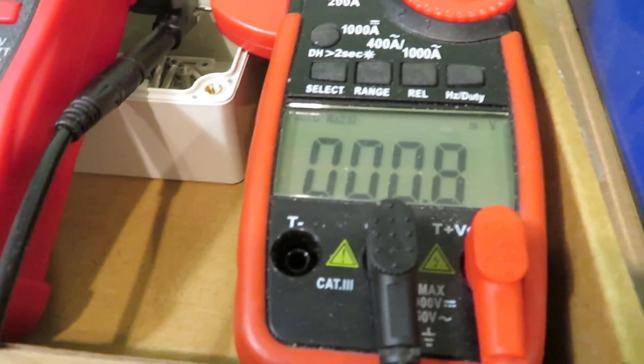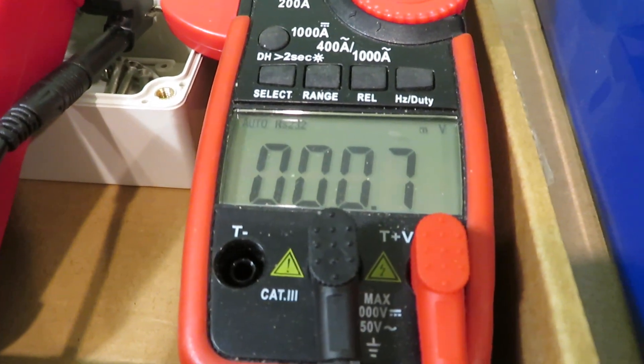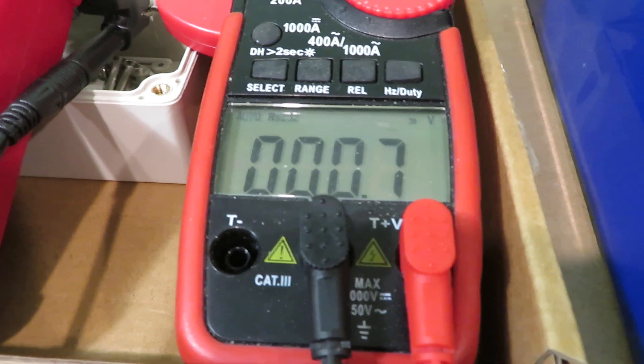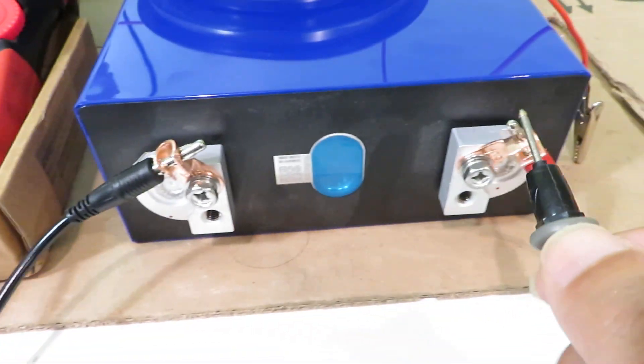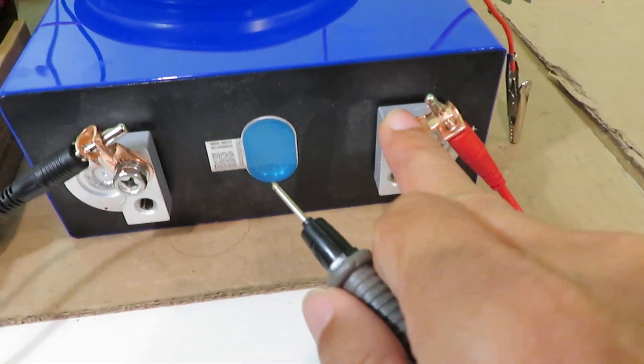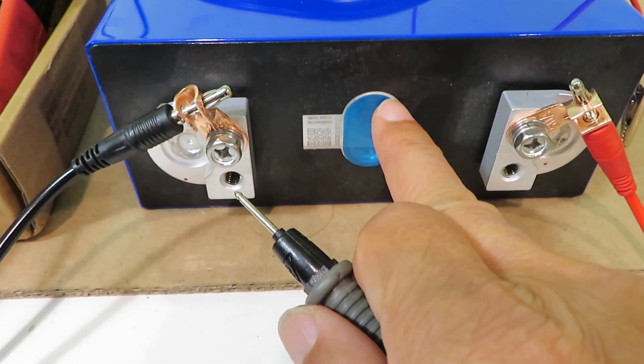And it measures 0.8, 0.7 millivolt. So indeed there's very little voltage difference between the positive terminal and the aluminum casing.